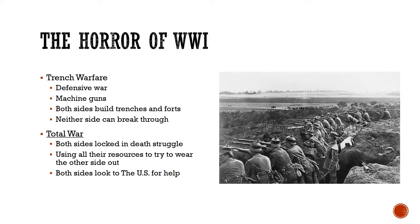Trench warfare is a type of war in which defense is way stronger than offense, largely because of a new invention: the machine gun. The machine gun can shoot hundreds of bullets a minute, so one person set up with a machine gun can mow down thousands of troops and is basically invincible. What this means is that both sides just dig big trenches — essentially ditches — and put machine guns all along them, making it essentially impossible to attack. Both sides build trenches, and it's impossible for either side to break through and win the war.